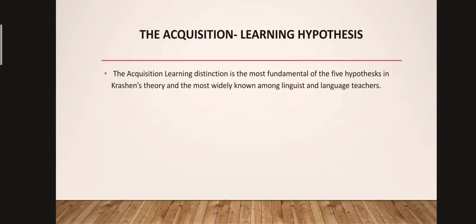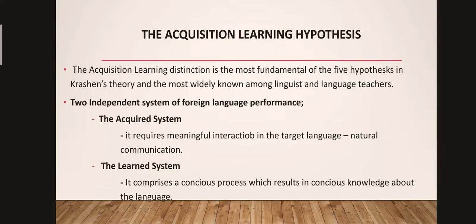The acquisition-learning hypothesis is the most fundamental of the five hypotheses in Krashen's theory and the most widely known among linguists and language teachers. According to Krashen, there are two independent systems of foreign language performance: the acquired system and the learning system. The acquired system is the product of a subconscious process very similar to the process children undergo when they acquire their first language. It requires meaningful interaction in the target language and natural communication, in which speakers are concentrated on the communicative act.